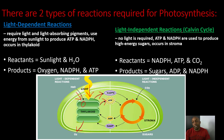Then we move on to our light-independent reactions, also known as the Calvin Cycle. No light is required in this process. ATP and NADPH are used to produce high-energy sugars, and it occurs in the stroma. The reactants for this process are NADPH, ATP, and carbon dioxide — all three go in as reactants. The products are going to be sugars and ADP.